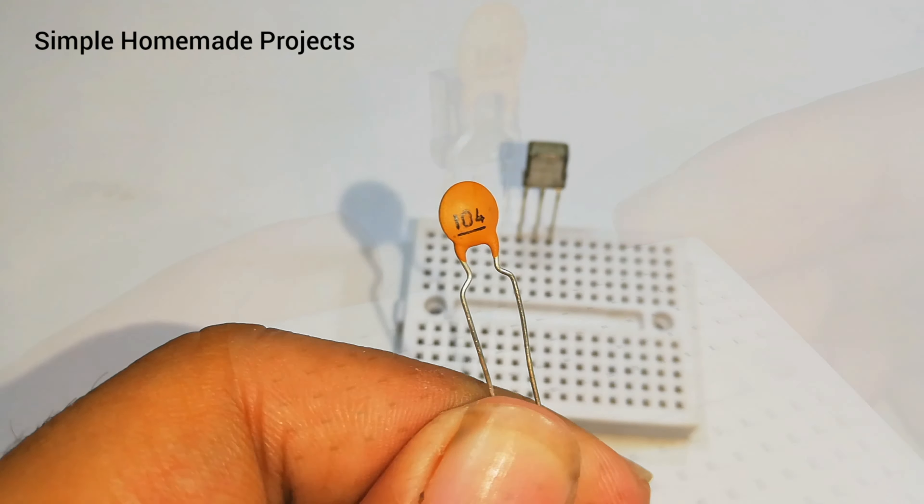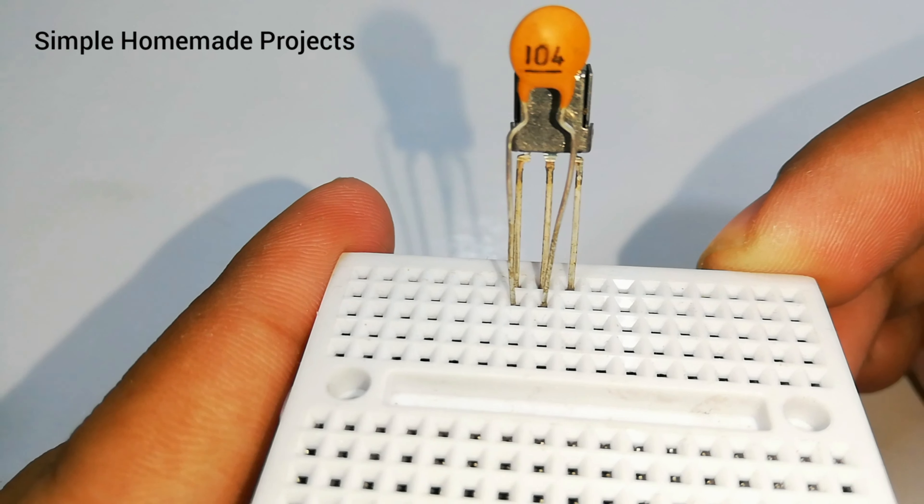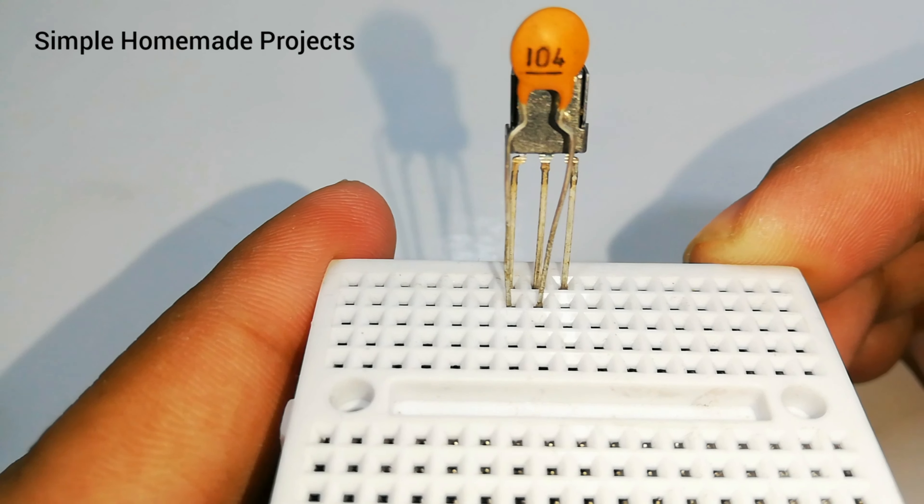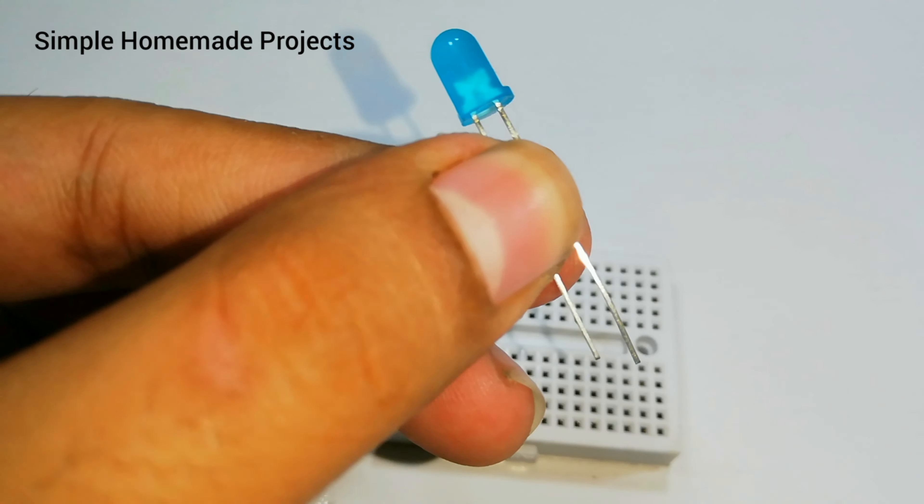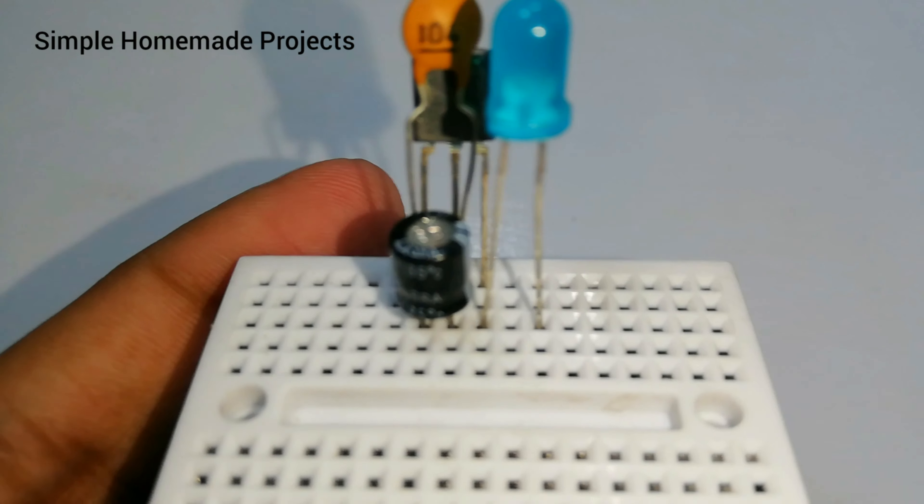Place 100 nanofarad capacitor between left and middle pin of the receiver. Now place 16 volts 100 microfarad capacitor between same pins but negative terminal with middle pin. Connect the LED negative terminal to the right pin of the receiver and positive terminal to a free rail.